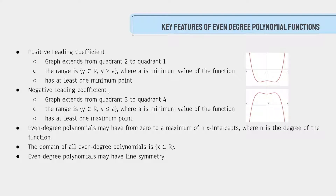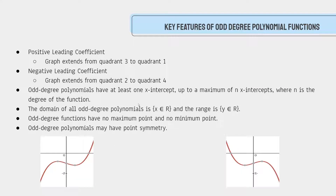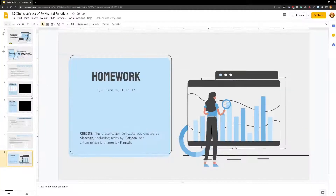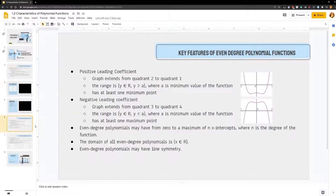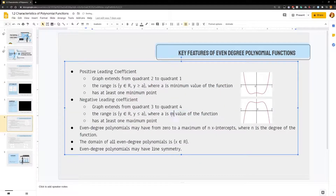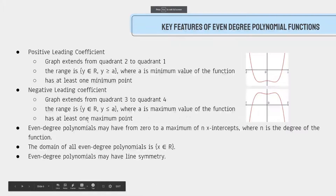If it has a negative leading coefficient, then everything gets reversed. Now it extends from quadrant 3 to quadrant 4. The range is y is an element of all real numbers such that y is less than or equal to a, where a is the maximum value of the function. And it has at least one maximum point.